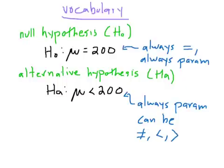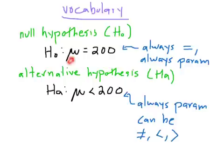Let's pause and do some vocabulary. The null hypothesis, H sub O, is usually what you assume to be true — here, mu equals 200. When you write the null hypothesis, it's always what you're assuming to be true in the problem. It's always an equal sign, and it's always a parameter — mu. The null hypothesis will never be in terms of X-bar. When we get into proportions, it might be P, but it will always be a parameter — a mu or a P — never an X-bar or a P-hat.